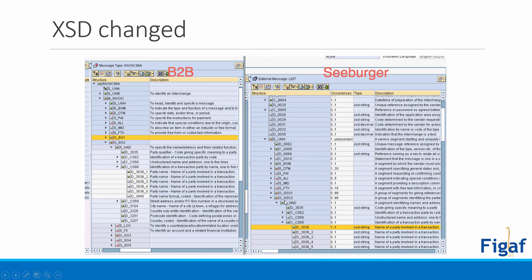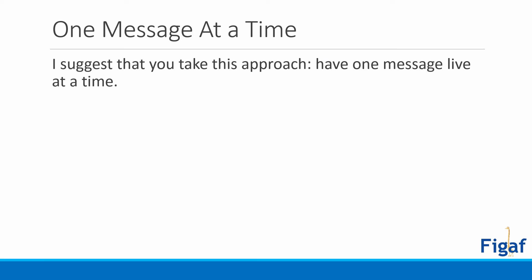The group segments have also changed — going from GSSG1 to just SG1. It's not a huge thing but it still means you have to update your mappings. There are also small differences like an added value at the end. These aren't big changes individually, but you have to go through all of them and remap them using the mapping tool. It does take time and you need to make sure things are mapped correctly.